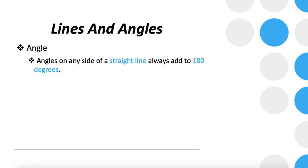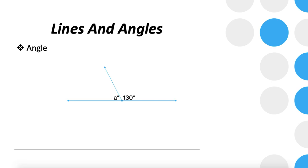Now, if we consider a straight line, the angles on any one side of a straight line must add up to 180 degrees. On both sides combined, they add up to 360 degrees, like a circle. For example, if the examiner asks us to find the value of A, and we know A plus 130 must equal 180 degrees, then subtracting 130 from both sides gives A equal to 50 degrees.